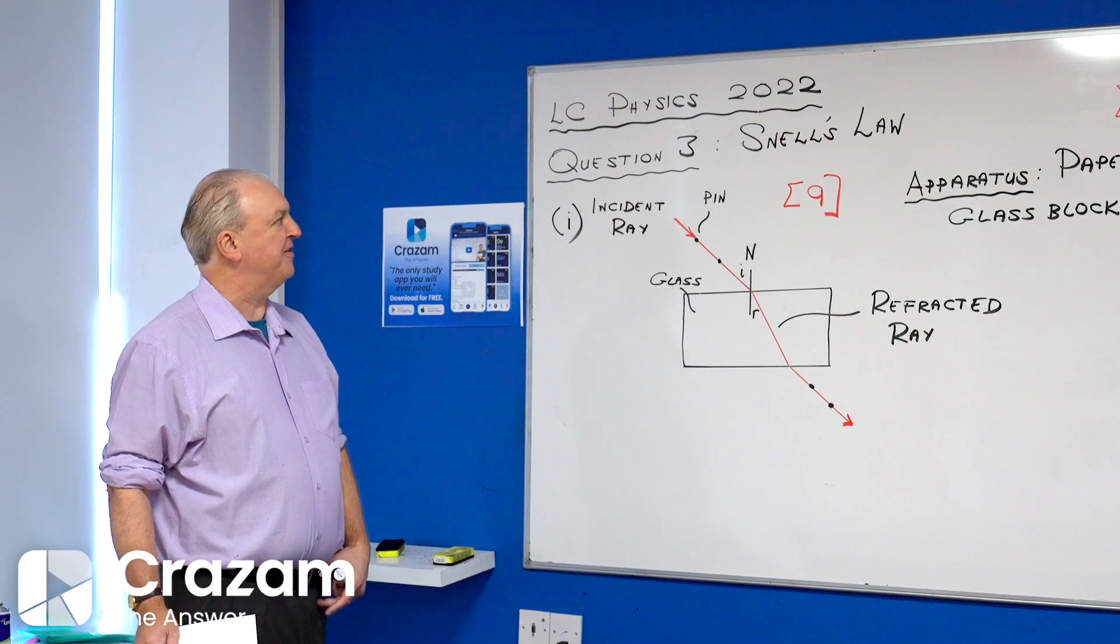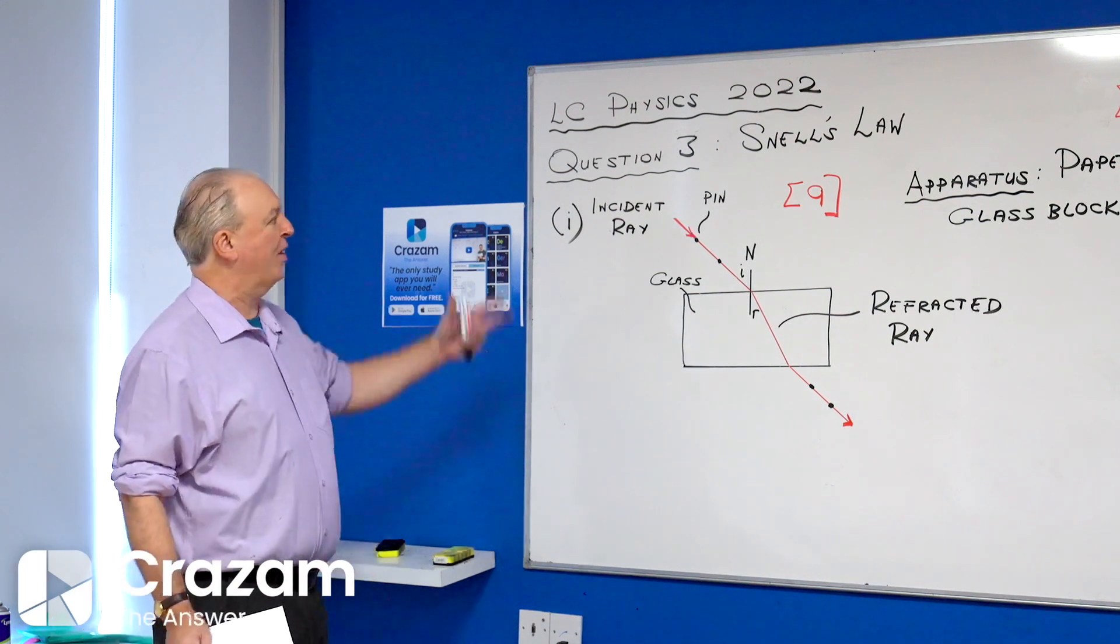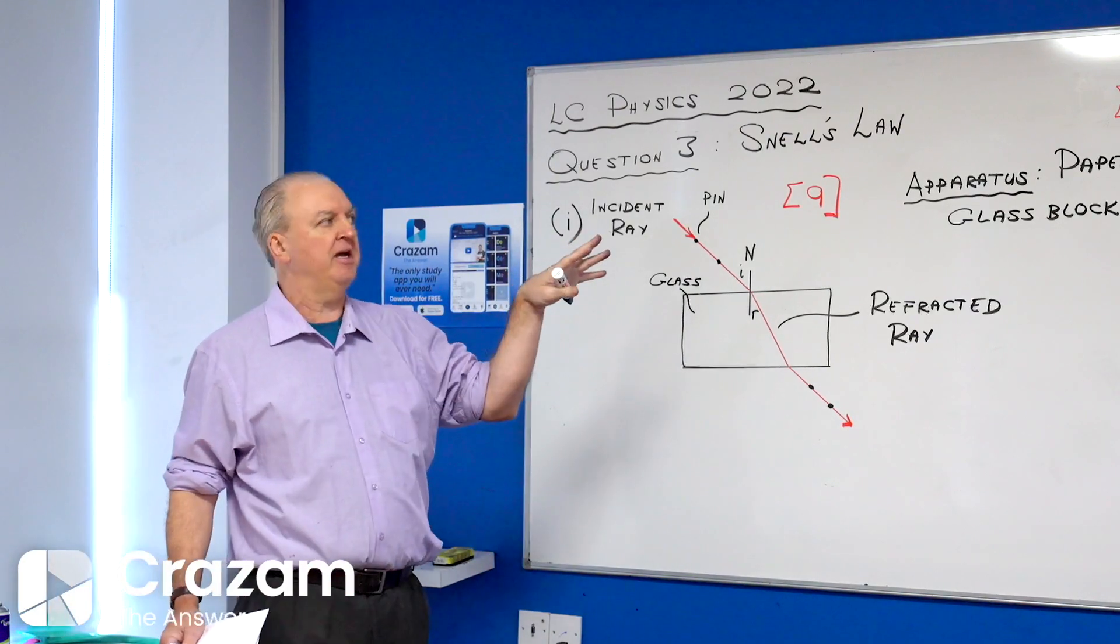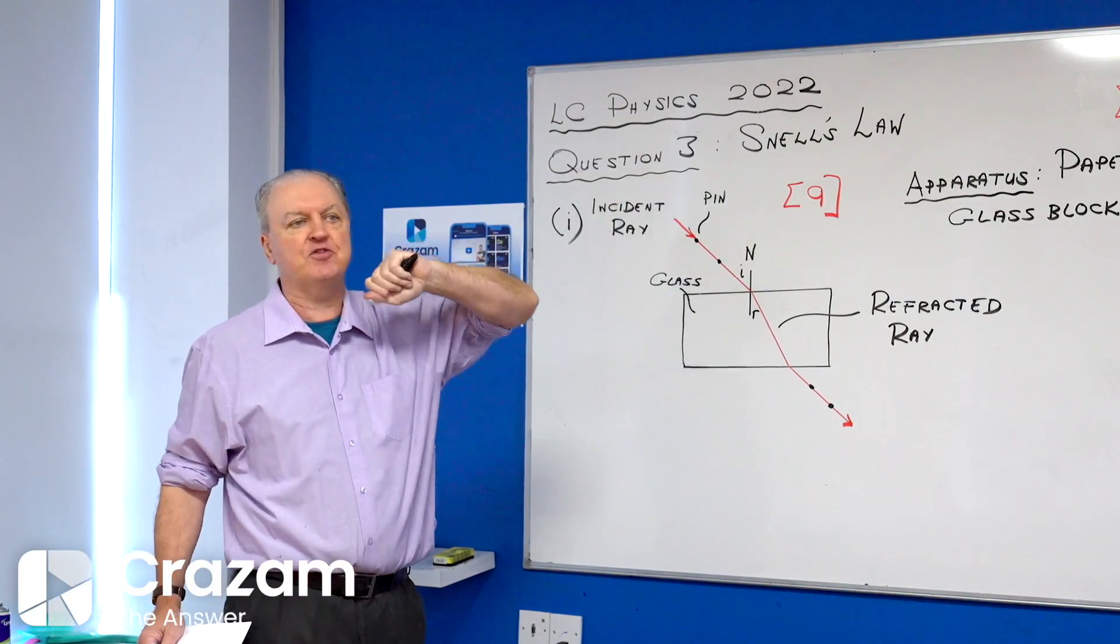We're doing Leaving Cert Physics 2022, question 3, which is an experimental question from section A. All section A questions are 40 marks.